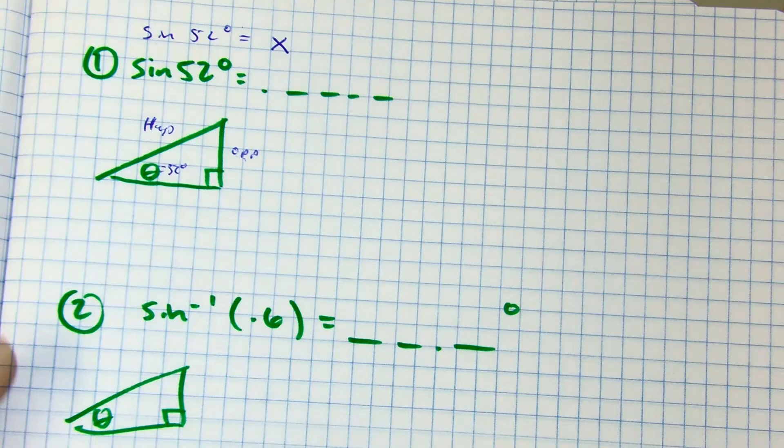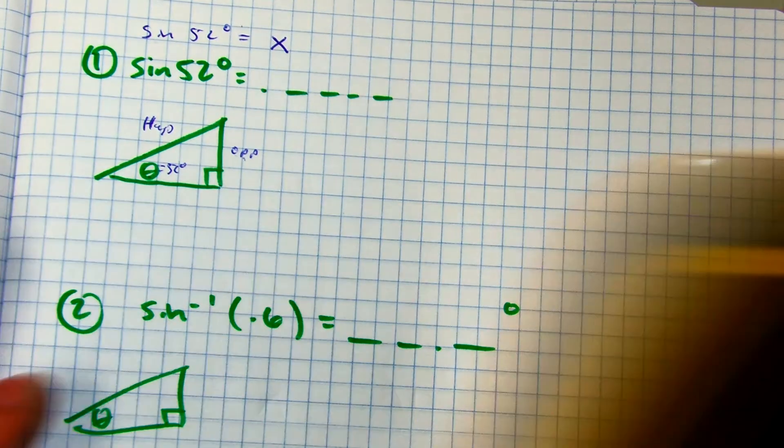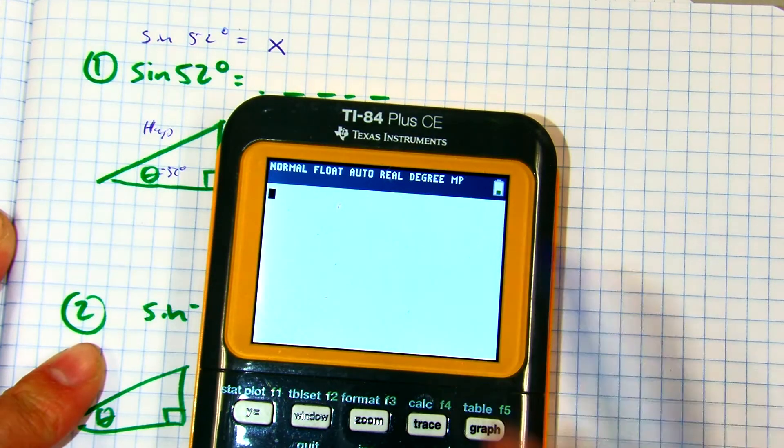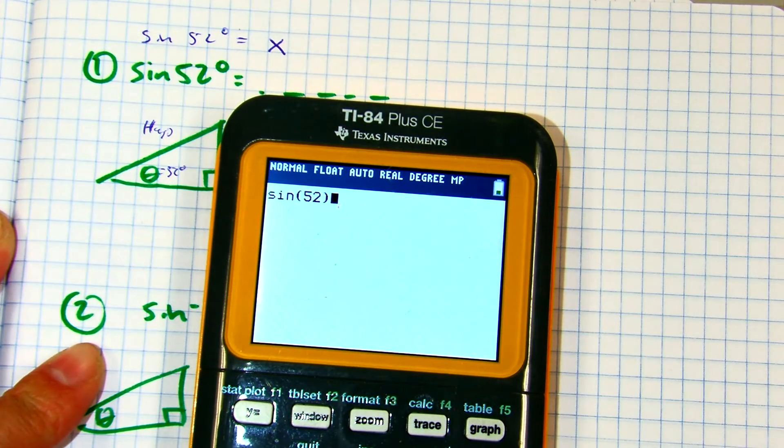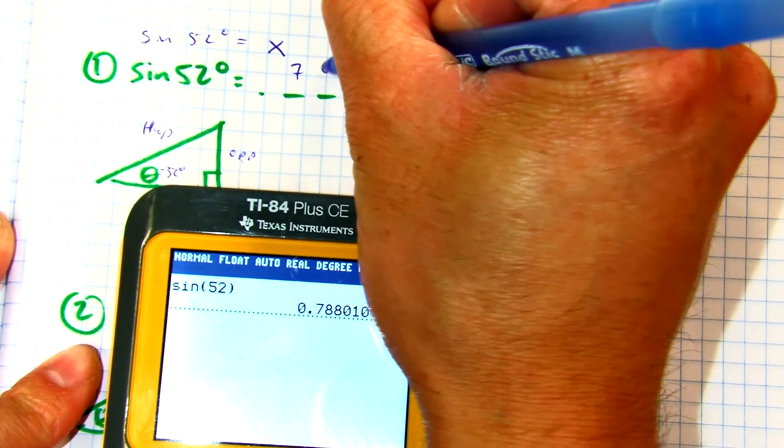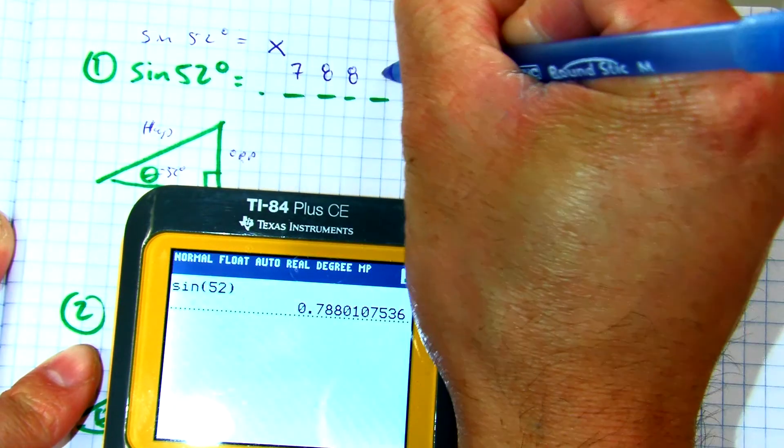Let's punch it in. Klaus, what mode are you in? So degrees in my calculator, sine of 52. And I get 0.7880. Raise your hand if you got that.